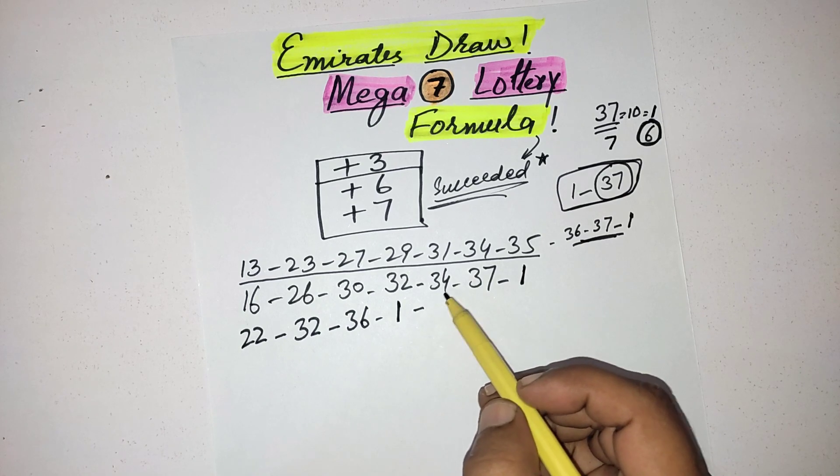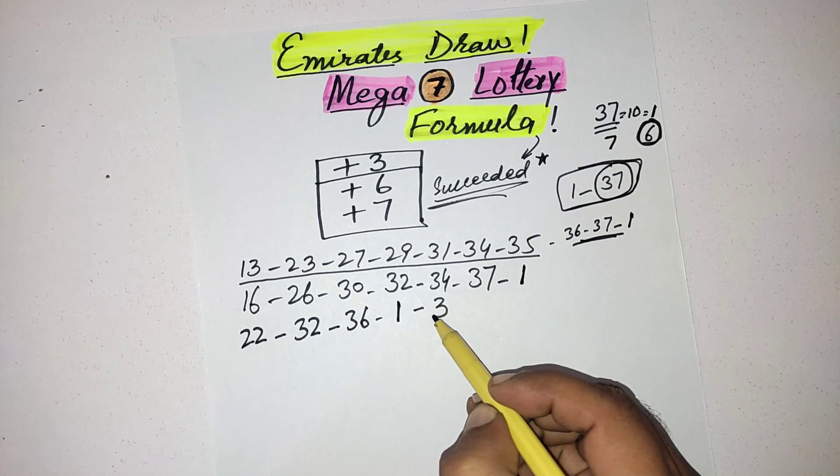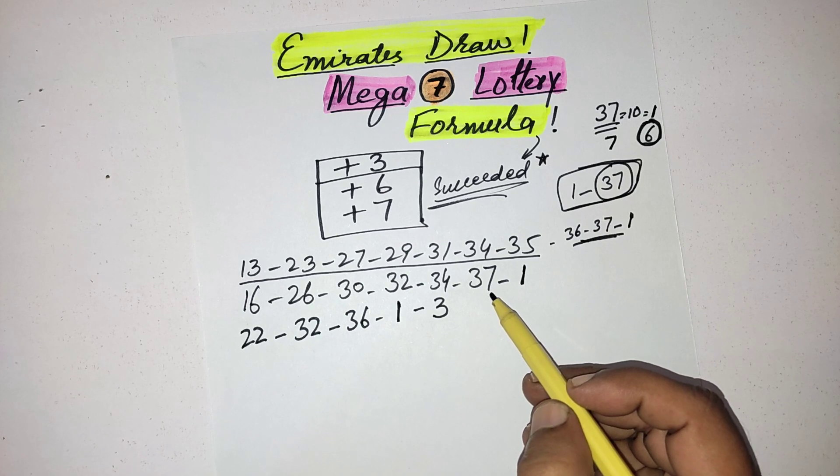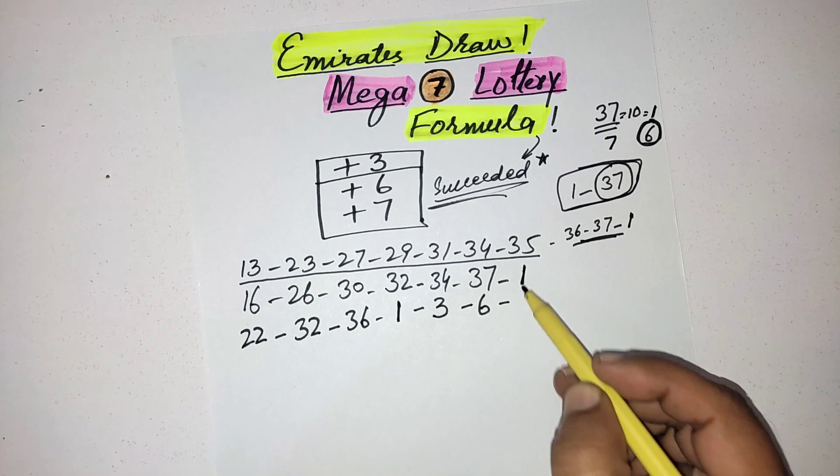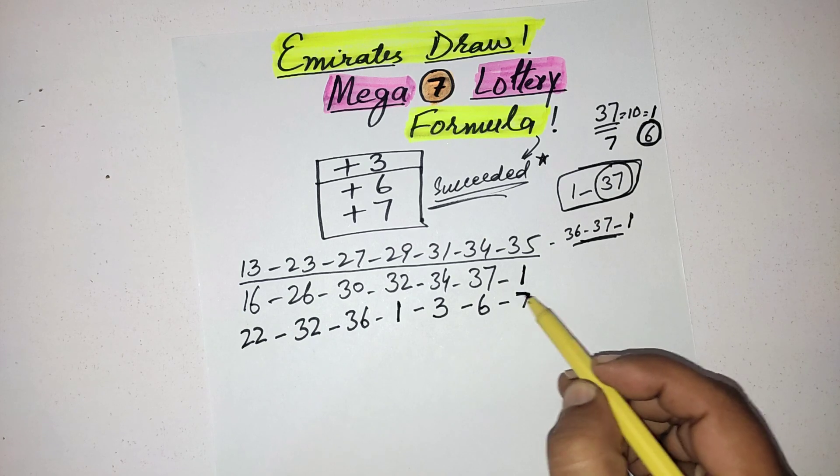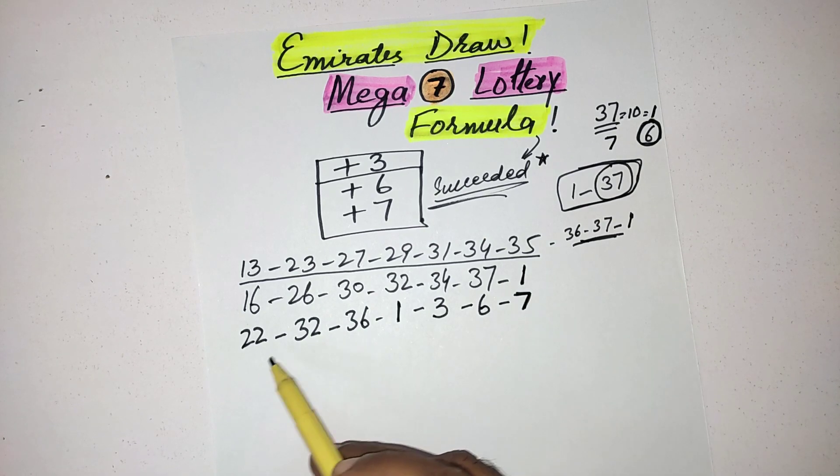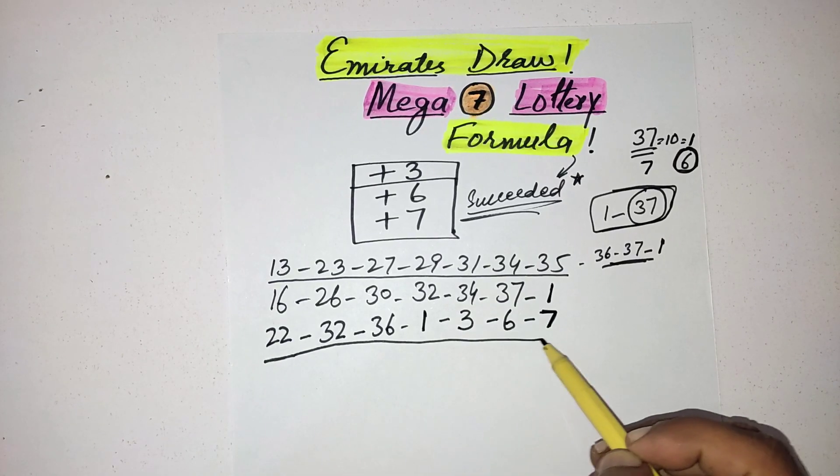34 plus 6 you got 3, 37 plus 6 is equal to 6, and 1 plus 6 answer is 7. Another line you got.